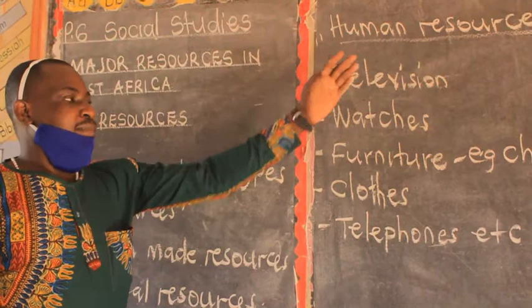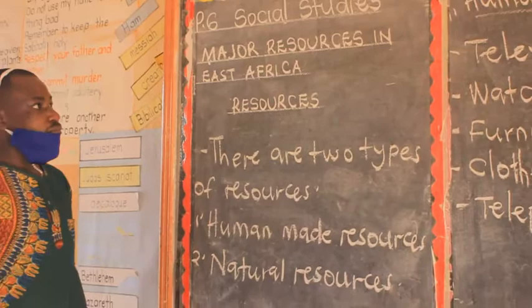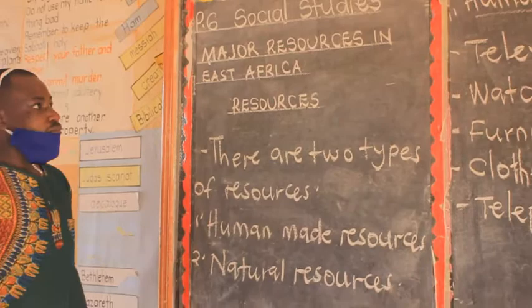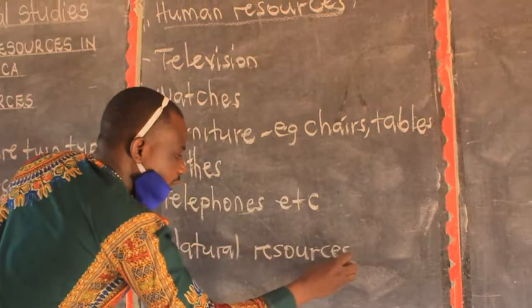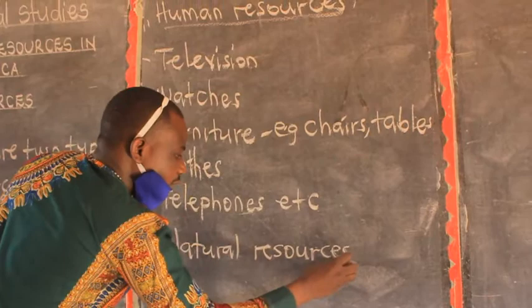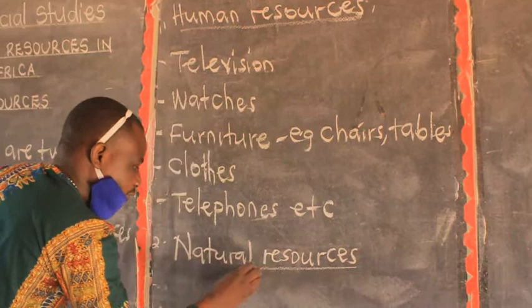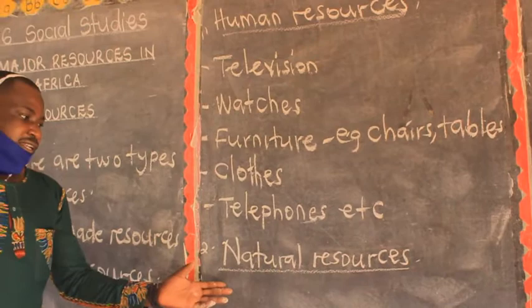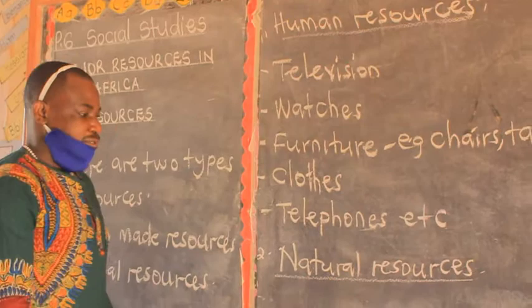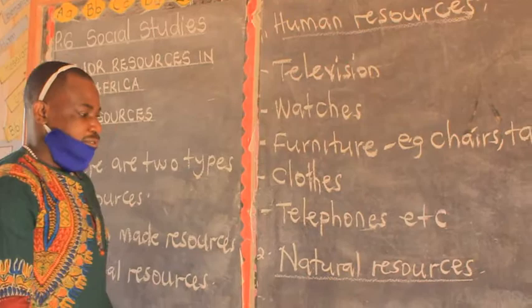The second type of resources is natural resources. Natural resources are components of the environment that people use to satisfy their needs, and they exist on their own.